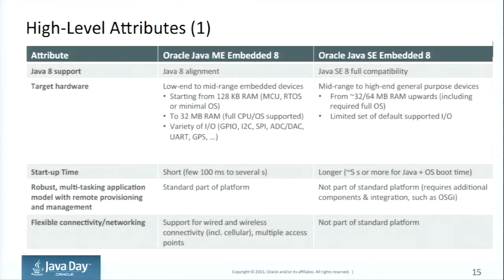Java ME versus SE — a little more detail. For support, ME is trying to align while SE is full Java SE compatible. For hardware, ME is low-end — anything from 128 kilobytes of RAM as a minimum up to 32 megabytes. On the SE side, we have mid-range to high-end general-purpose devices, from 32 to 64 megabytes of RAM and up. Startup time is also different: ME is very short — about 100 milliseconds — compared to about five seconds on the SE side.